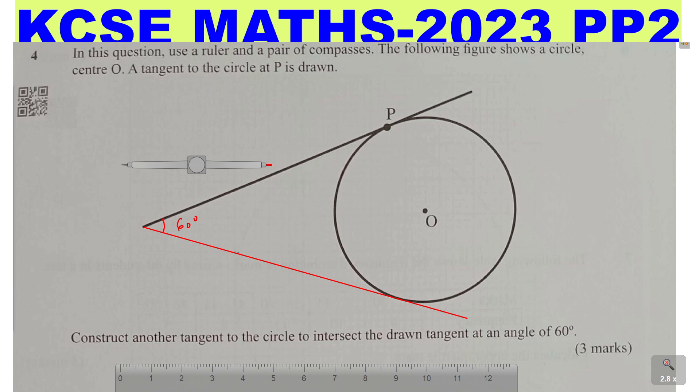One property that you're supposed to understand is that tangents to a circle from a common external point are equal. So this tangent, let me call this point M, tangent MP is equal to tangent, let me call this point N, MN. So these two are equal.